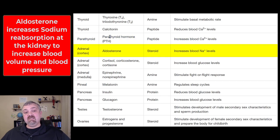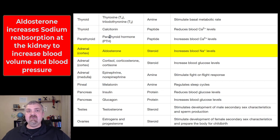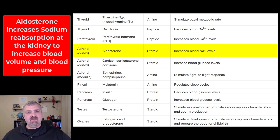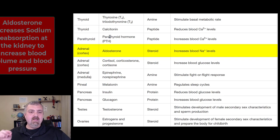Next we have the adrenal cortex. Aldosterone is going to increase the reabsorption of sodium at the kidneys, and water follows that sodium in. Aldosterone's job is to keep your plasma volume and blood pressure up by reabsorbing sodium and water following it via osmosis.